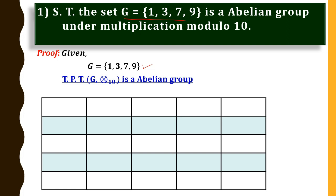In this table, the number of rows and columns depends on the number of elements in the set G. Always write the binary operation in the first box — multiplication modulo 10. This topmost row is called the header row and this column is called the header column. We shall fill up the header row and header column with the elements of G: 1, 3, 7, 9.